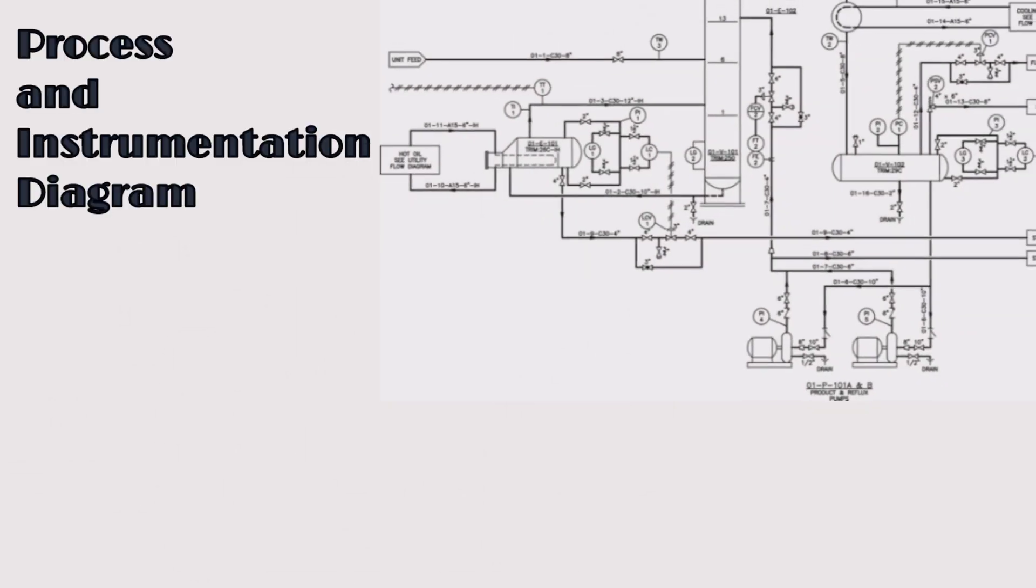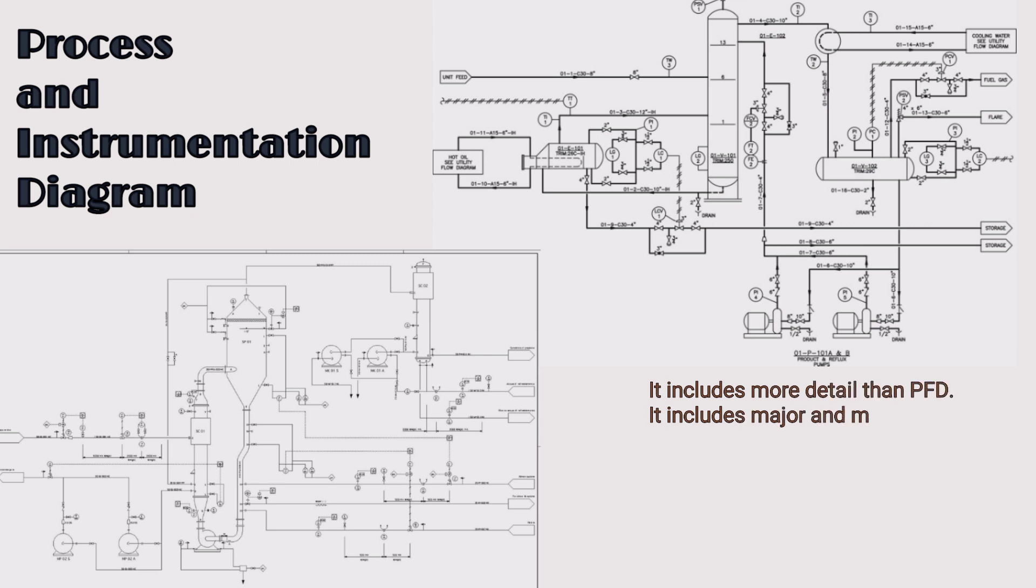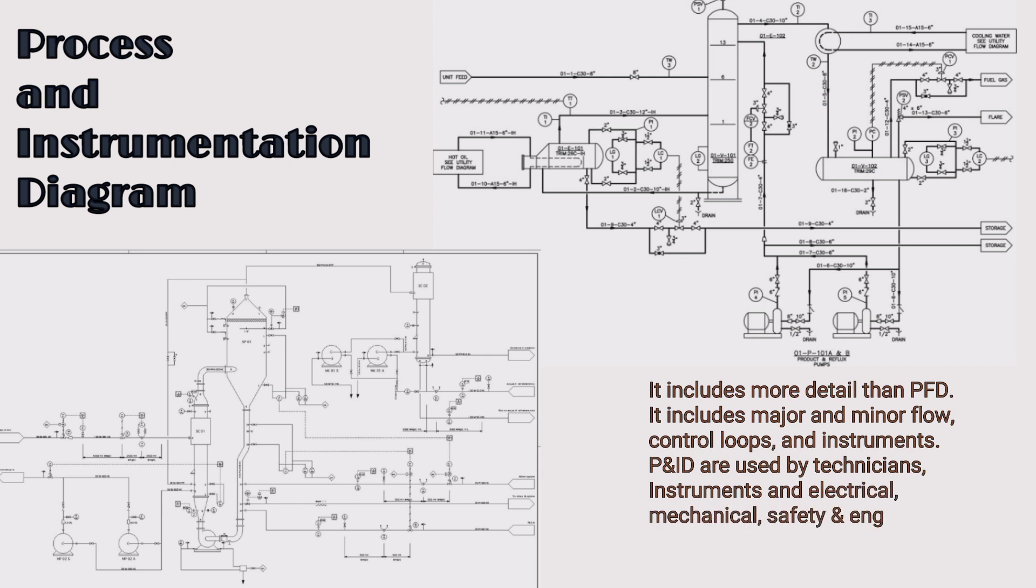Process and instrumentation diagram, P&ID. Process and instrumentation diagram includes more detail than PFD. It includes major and minor flow, control loops, and instruments.